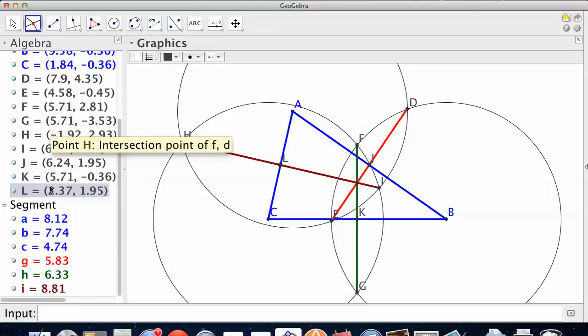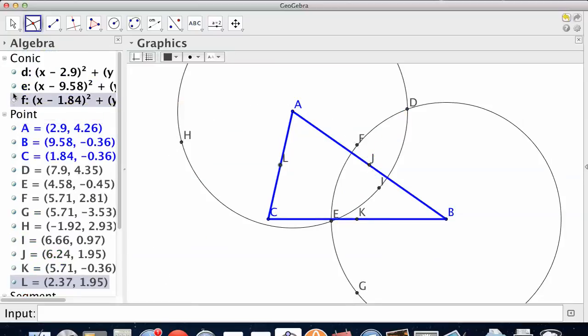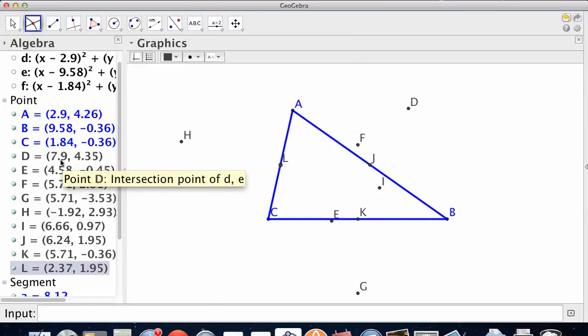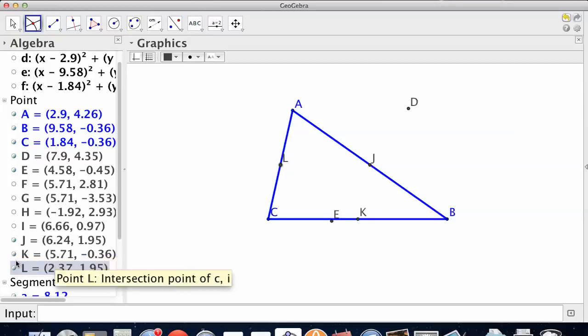Now I want to hide stuff because I just need those midpoints. And let's hide the circles too. And we can hide everything. We can hide F, probably G, H, I. Not J, not K, not L. Oh, E. All right.